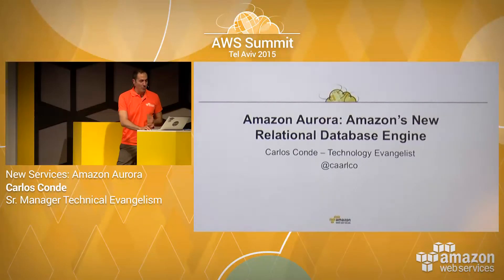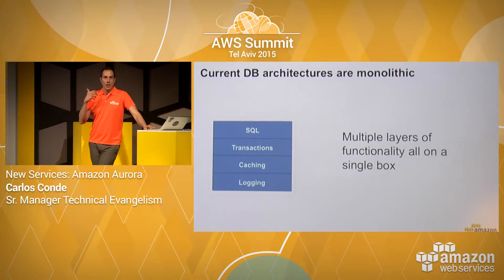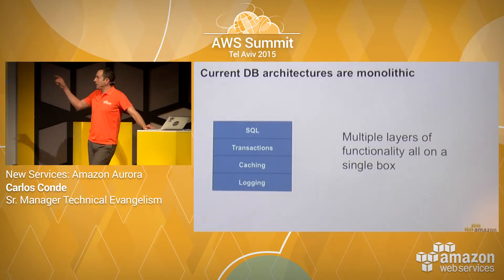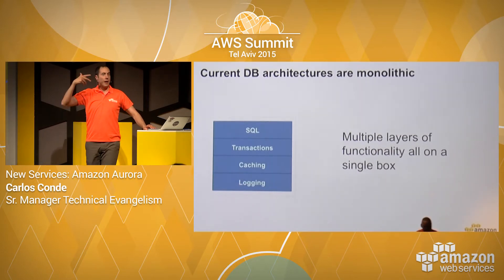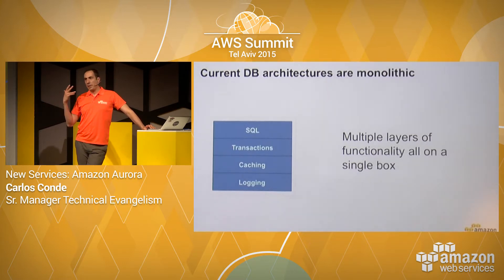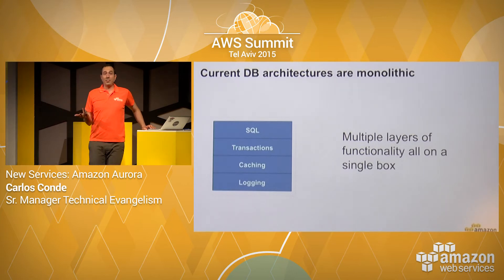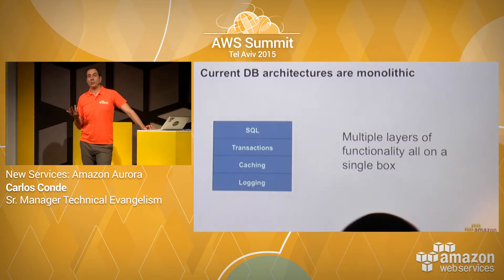I just wanted to highlight a couple of things on Aurora. This is the new relational database engine that we released. It came from the fact that when we've been creating and launching RDS, and as we evolved RDS, we saw many practices on architecture that basically came down to the problem that relational databases as they exist today are monolithic architectures.